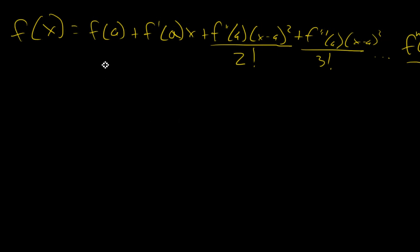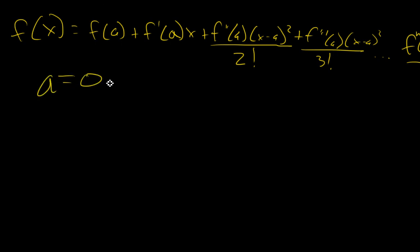But this is the Maclaurin series when a equals zero. That just means we're centering this at a, and a is zero. We're centering it at whatever a is, and we're centering it at zero.